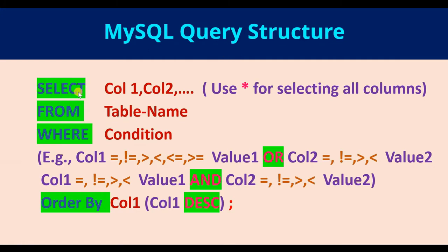Every query starts with the keyword SELECT. After SELECT, we have to give the column names that we want to select. We could specify one or more columns, or if we want to select all the columns, we could use asterisk instead of column names. Then we have to say from where we have to select these columns.